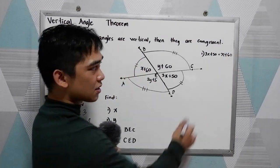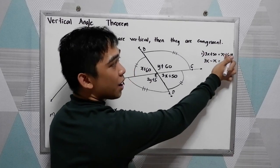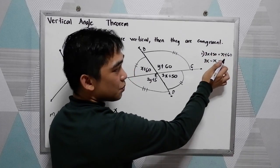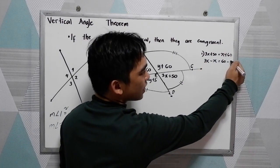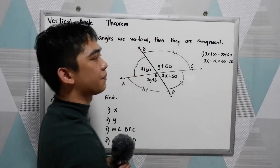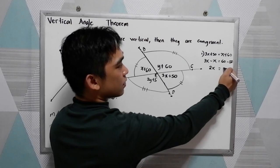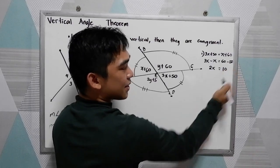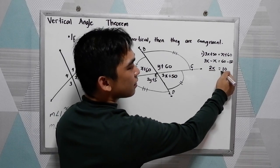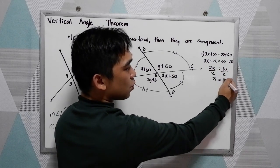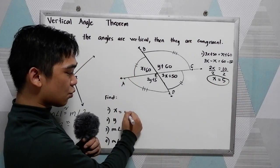Now, solve for x. 3x minus x, using the addition property of equality, or just subtract x, so 60 minus 50. 3x minus x is 2x, equal to 60 minus 50, that is 10. To find x, divide by 2, so x is equal to 5. We have now a value for x, x is equal to 5.